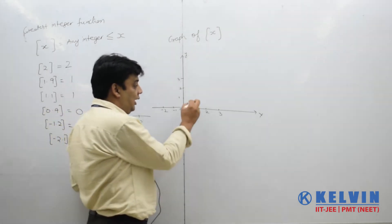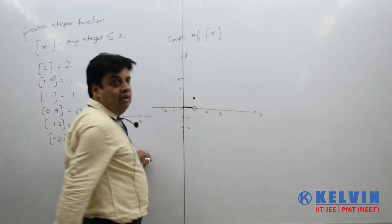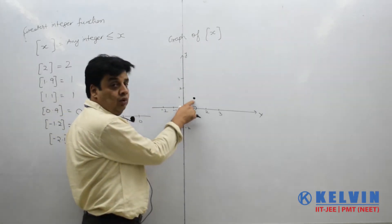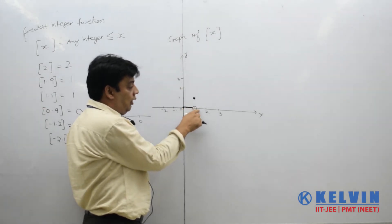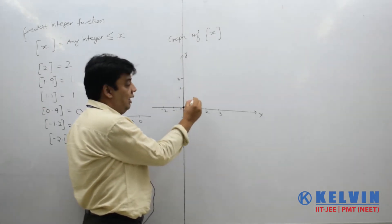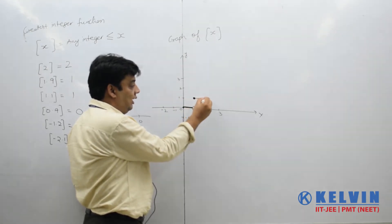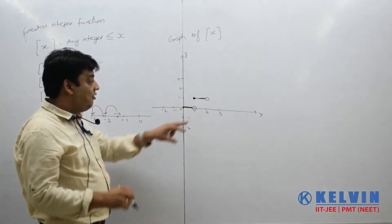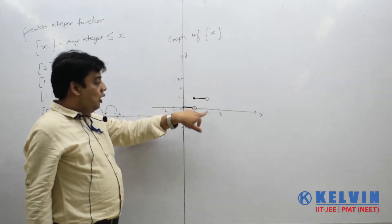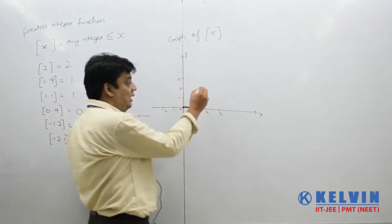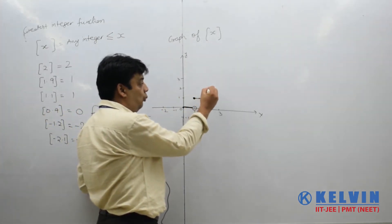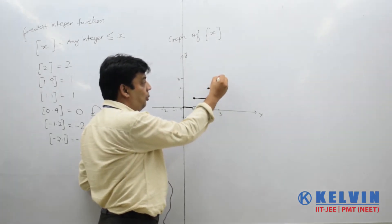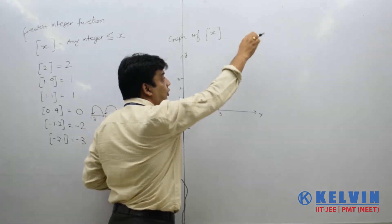At x equals 1 the Greatest Integer is 1, so the graph closes at that point. Then for x from 1.1, 1.2, 1.3 onwards, the Greatest Integer remains 1. The graph opens again at x equals 2, where the Greatest Integer becomes 2. For 2.1, 2.2 and so on, the Greatest Integer is 2. Then at x equals 3 the Greatest Integer becomes 3, and the pattern continues.